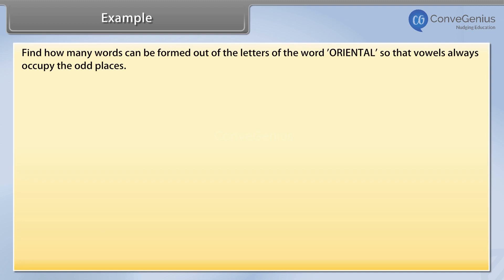Solution: The vowels in the word ORIENTAL are O, I, E and A. Total number of letters in the word ORIENTAL is equal to 8.